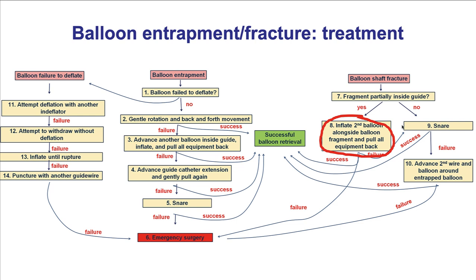What to do if the shaft fractures? The key factor determining treatment is whether the fragment of the balloon is partially inside the guide catheter. If it is not, one can use snares or try different wires. If there is enough length of the fractured balloon shaft inside the guide, the easiest method is to advance another balloon alongside the fragment, inflate it to trap the fragment inside the guide, and pull everything back.